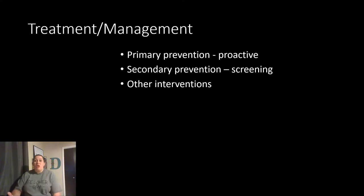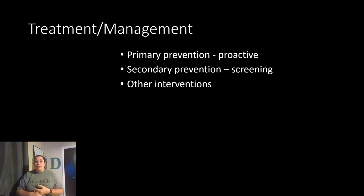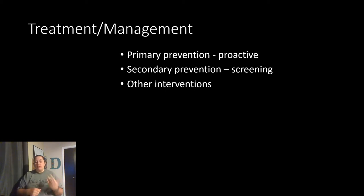Now that we have testing out of the way, let's talk about treatment and management. Primary prevention is proactive — this is stuff we want to do before there's even an issue, to help keep us from having an immune problem. These include vaccines, because they'll help boost your immune system, and avoiding high-risk situations or behaviors like unprotected sex, drugs, and needle use.